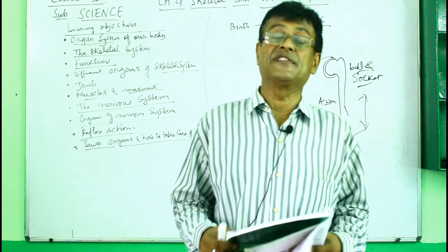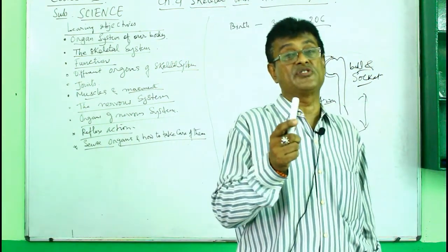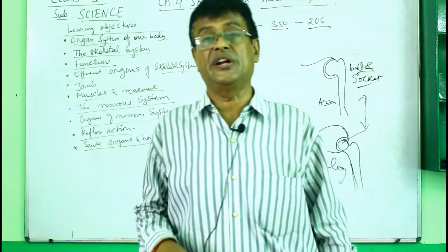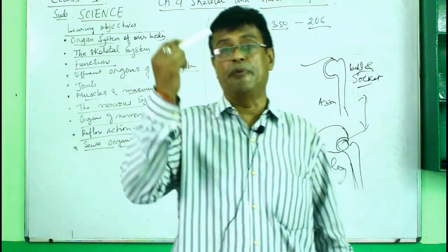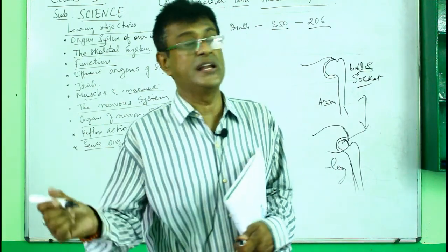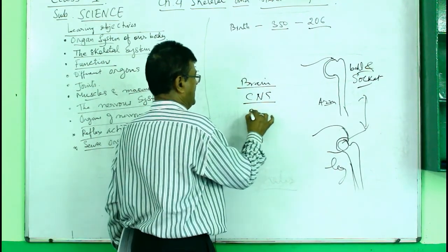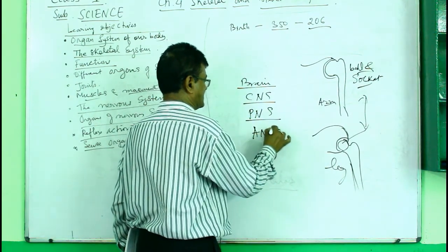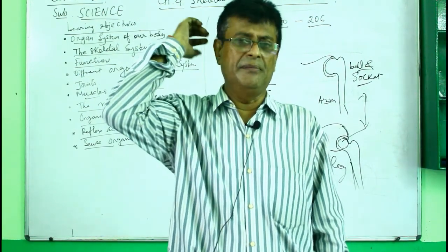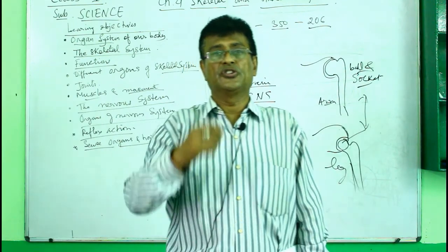The nervous system is the king of all the systems in the human body because it controls all the other systems. The nervous system comprises the brain - the brain is the most developed of all organs in organisms. The brain along with the nervous system has three main components: CNS or Central Nervous System, PNS or Peripheral Nervous System, and ANS or Autonomic Nervous System. The brain has three parts: the cerebrum (big brain), the cerebellum (small brain), and the medulla.